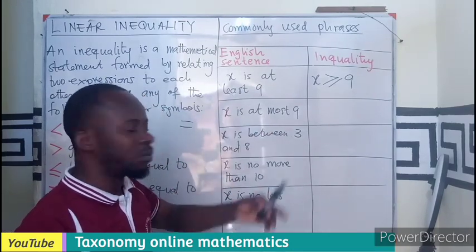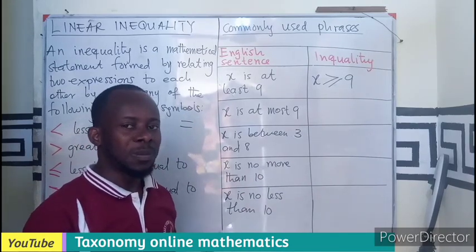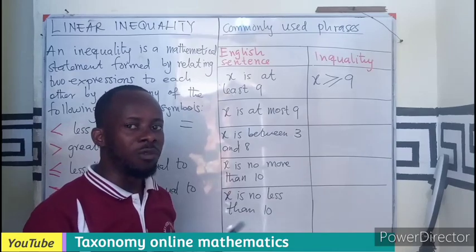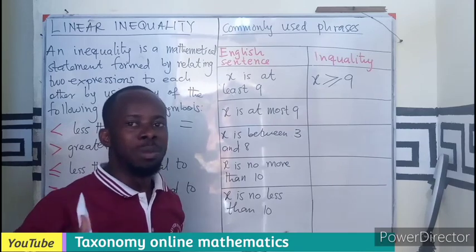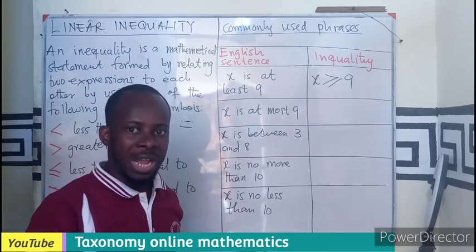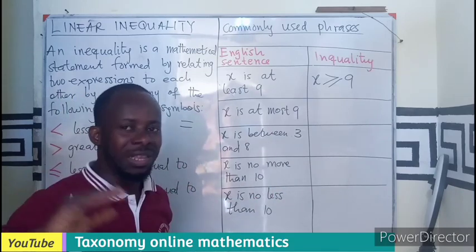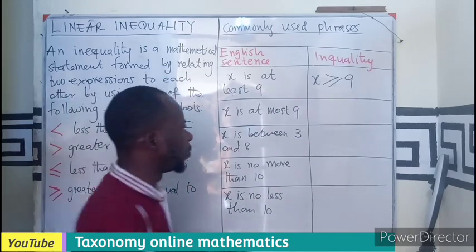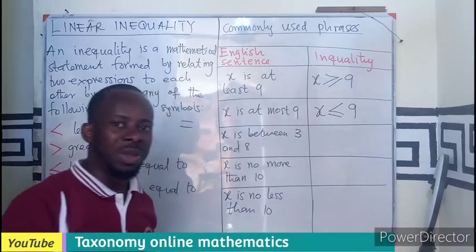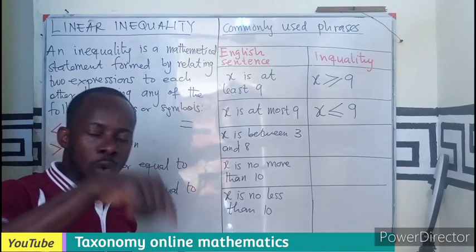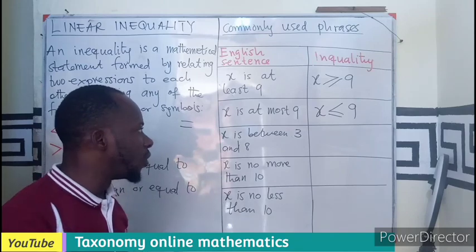'X is at most nine' — for example, the ages of people in this class are at most twelve, meaning nobody in that class will be more than twelve years. So we can have two, three, four, five years up to nine. At most means the highest value should be nine, so x will be less than or equal to nine.